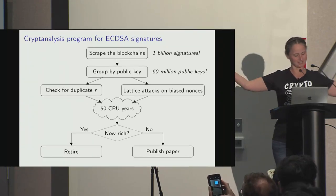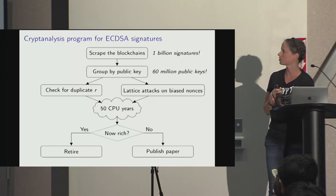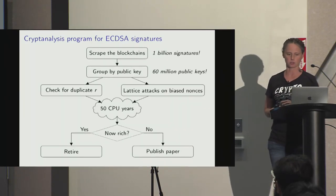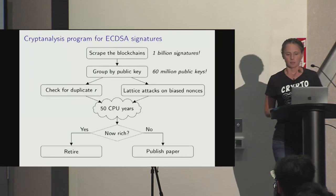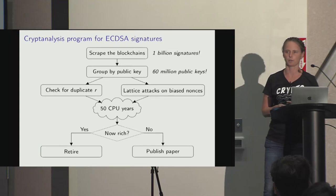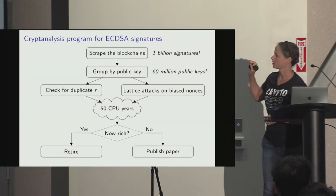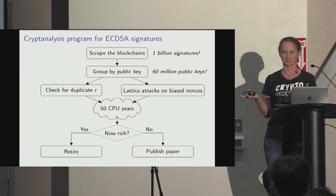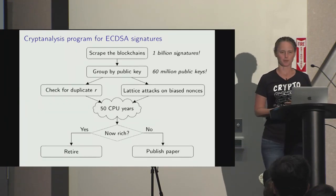Here is our cryptanalysis program: scrape the blockchains — the Bitcoin blockchain had a billion signatures. Group them by public key — 60 million Bitcoin public keys had generated more than one signature. Check for repeated nonces (duplicated R values) and lattice attacks on biased nonces. We spent about 50 CPU years running these. At that point, either you're rich and retire to an island without an extradition treaty, or you publish a paper — and I'm here.